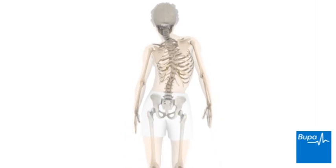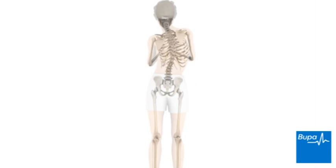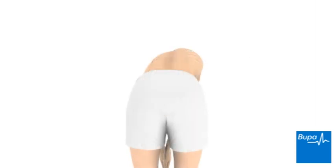To check if you have scoliosis, bend over from the waist, with legs and arms straight, and the palms of your hands together. If you have scoliosis, your ribs may be more prominent on one side when viewed from the back. You may also have one shoulder blade higher than the other, or it may be more prominent.